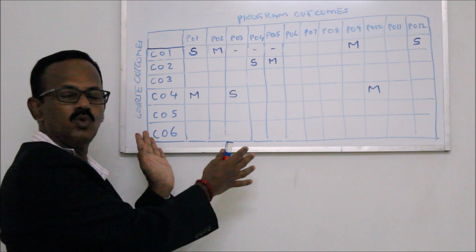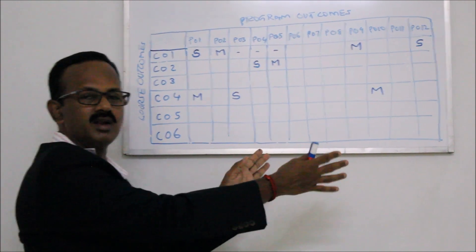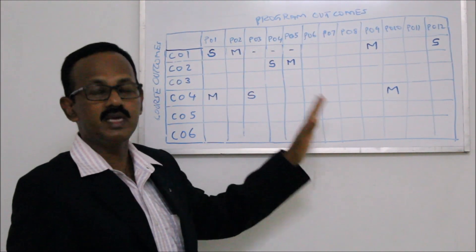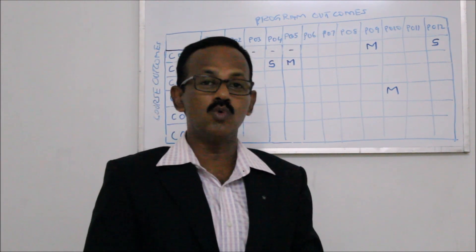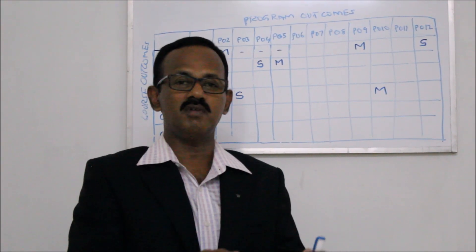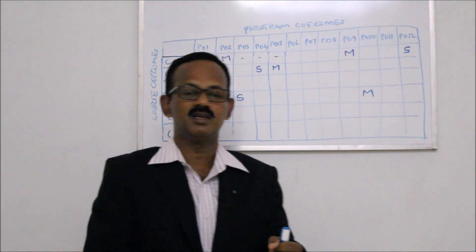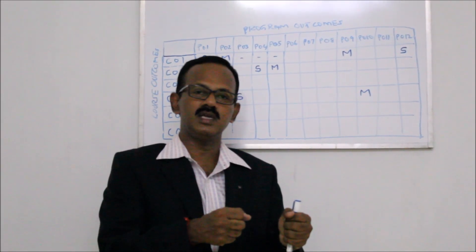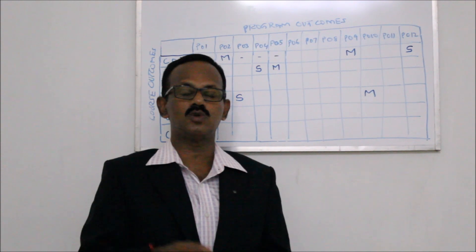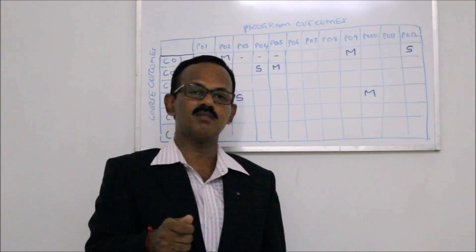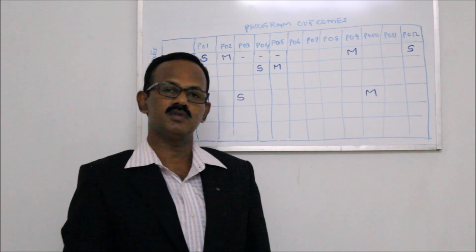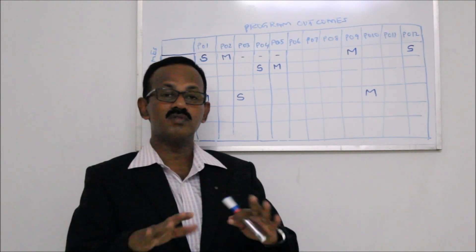This simply means our approach is only towards PO1 to PO5 and we are not concentrating on PO6 to PO12, which is not allowed. Each and every program outcome is equally important, and we should prove — not only through the mapping, but through supporting academic systems — that we have a very strong base, giving all opportunity and having all the assessment and evaluation processes through the teaching, learning, and evaluation process to ensure that enough is being done for the attainment of program outcomes 1 through 12 and beyond, including the program specific outcomes. This is the essence of the mapping.